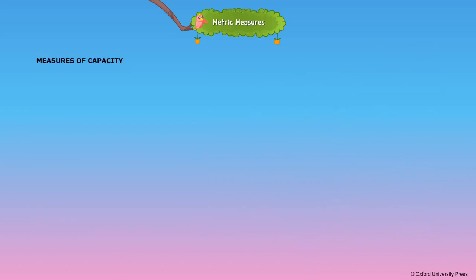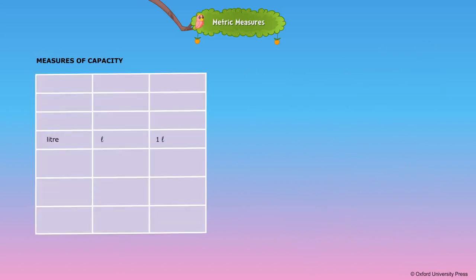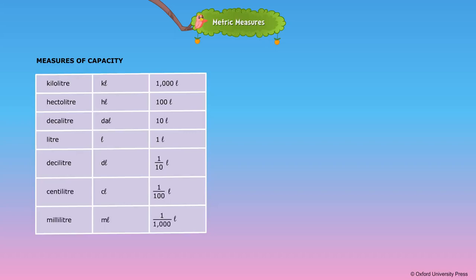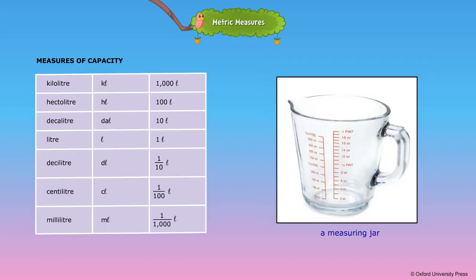Measures of Capacity. The standard unit of capacity is litre. The higher units of capacity are kilolitre, hectolitre, and decalitre. The smaller units of capacity are decilitre, centilitre, and millilitre. We use a measuring jar to measure capacity.